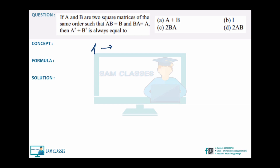Next question: A and B are both square matrices of the same order. Given that AB = B and BA = A. Find A² + B².